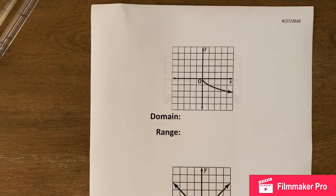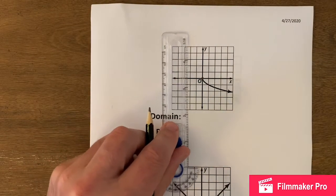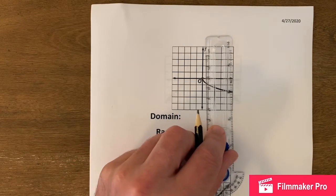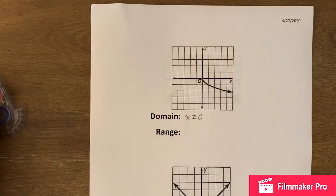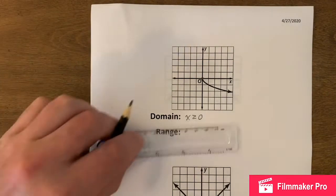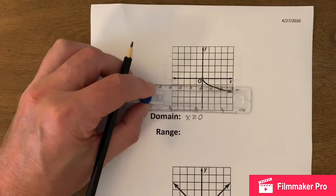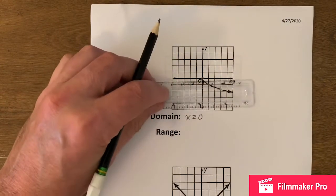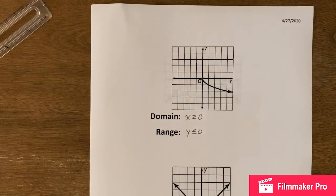Here we have one that looks like it's been reflected. Here's our first point right there. For the domain: nothing until right there at zero, then it starts and keeps going over to the right and down — so all x greater than or equal to zero. For the range, I hit the arrow first going down, and it stops at zero. So it goes zero on down — y less than or equal to zero is how we'd write the range on that one.